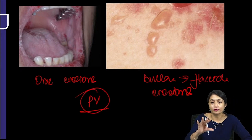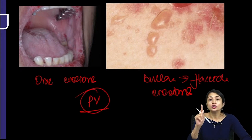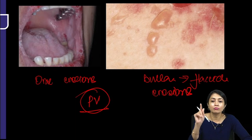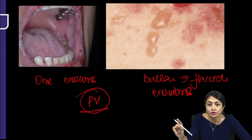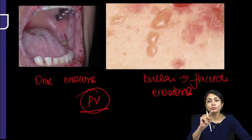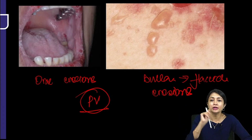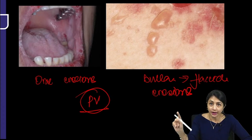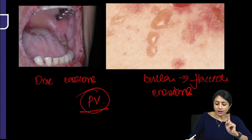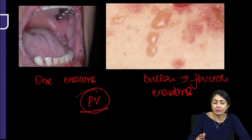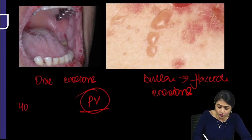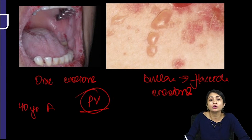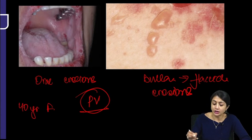Whenever you get this set of questions, you have to look for various pointers. You should be able to differentiate between pemphigus and pemphigoid group of disorders, and between PV and PF. Typically a 30 to 40-year-old female presenting with recurrent oral erosions with flaccid bullae.